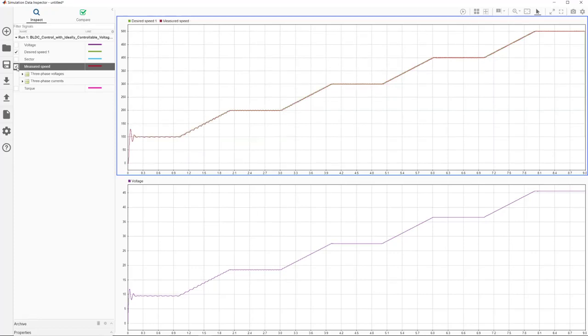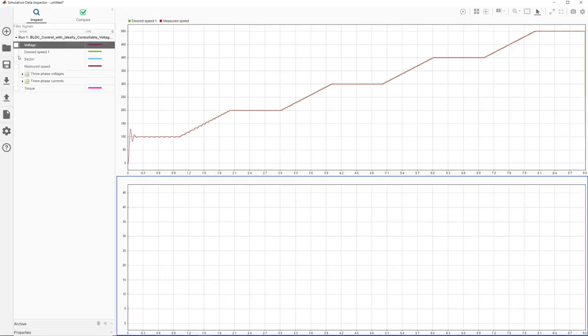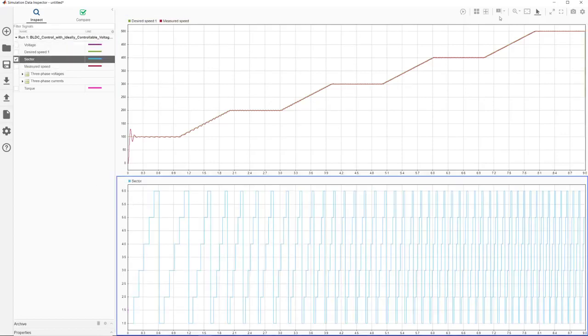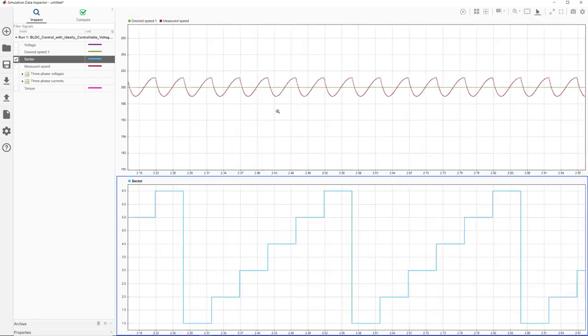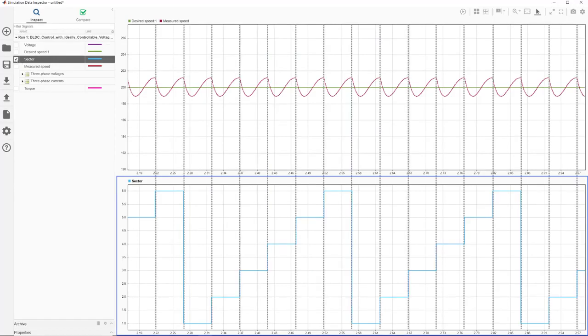One thing we immediately notice is the ripples in the speed signal. Here we have another plot showing when the rotor transitions between sectors. Looking at the sector and the speed plots together shows us that speed ripples have something to do with commutation, because the rippled pattern aligns with the beginning of each commutation cycle.